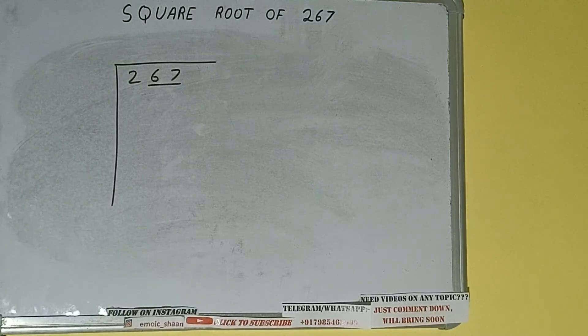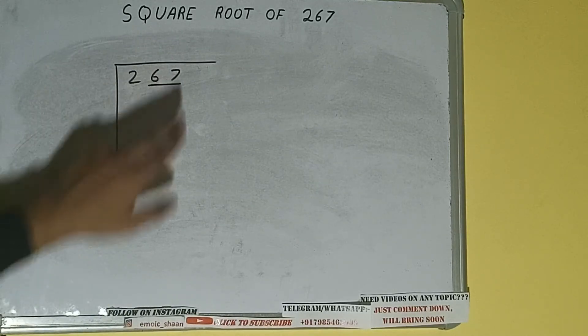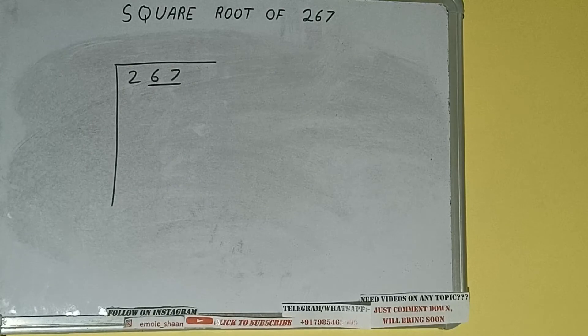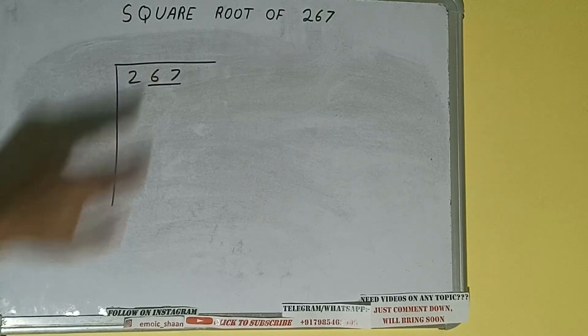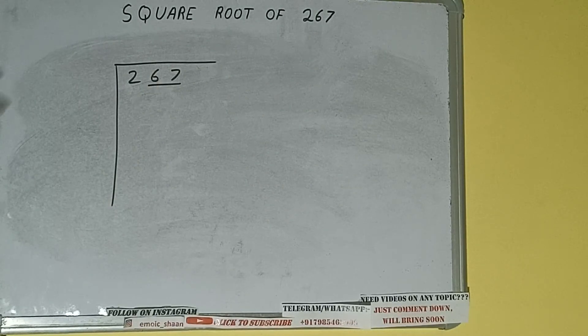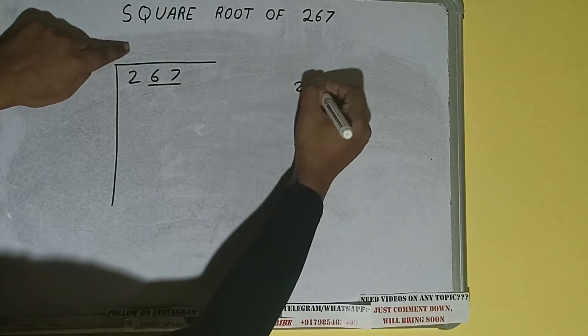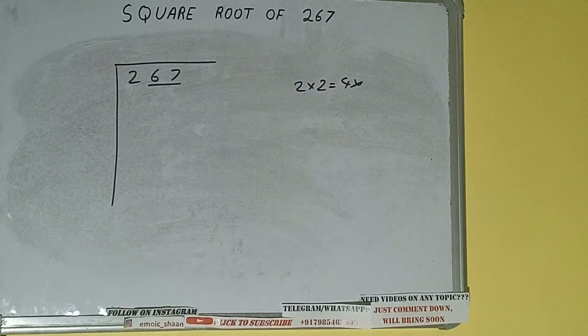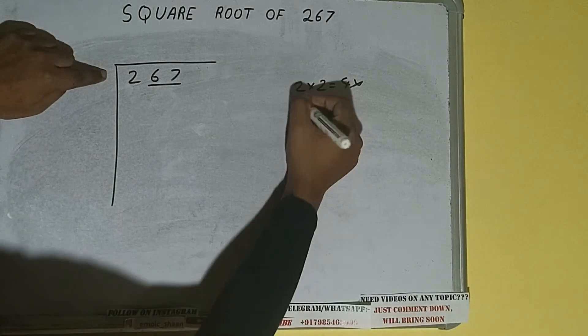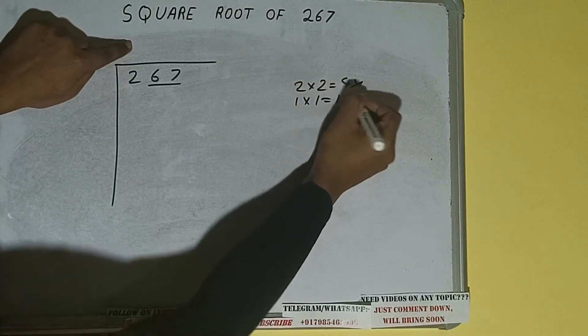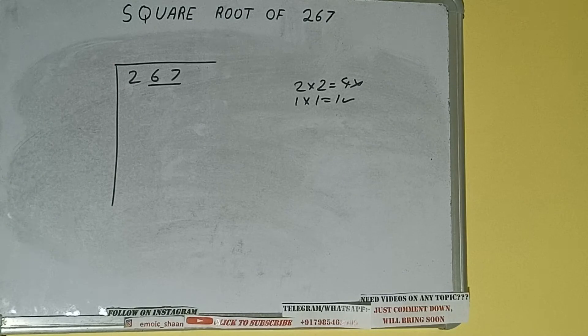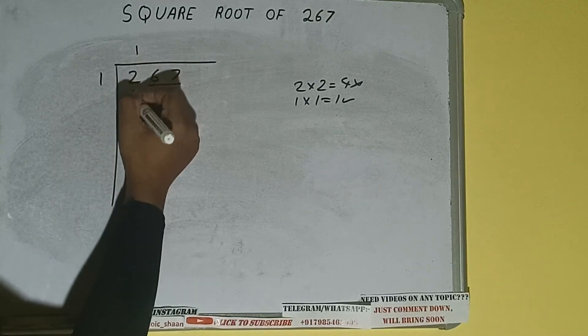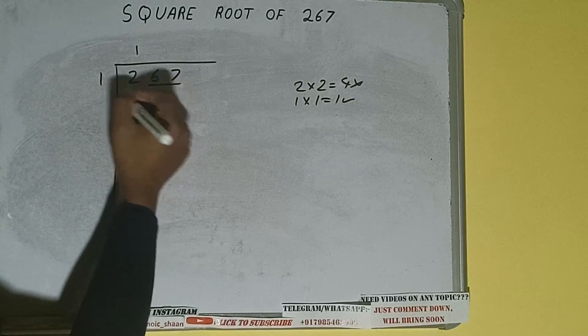First we'll divide this two and then bring down the pair. The rule is whatever number we write here we have to write here also. If we write two here and two here it will be four, which is greater than two, so we cannot use it. If we write one here and one here it will be one, which is correct. So one here and one here, one subtract one will be left.